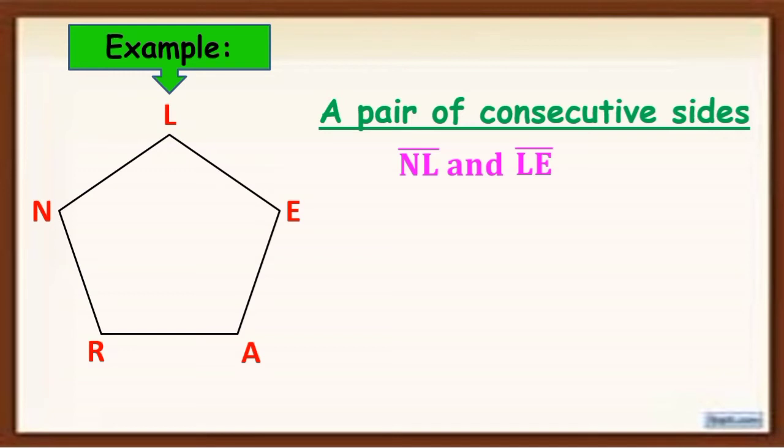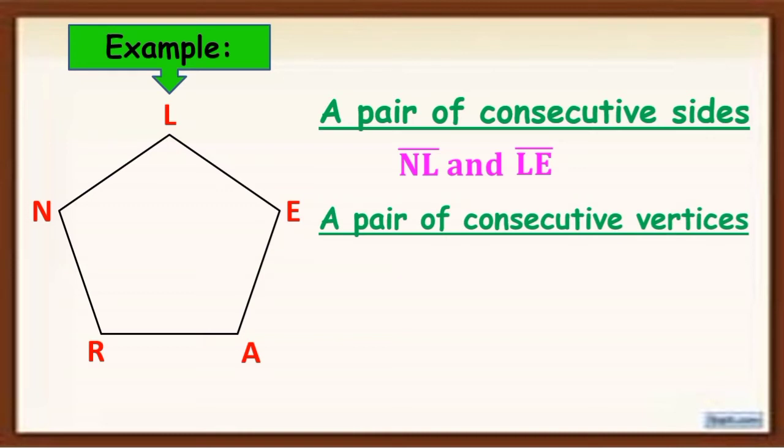Now, next is a pair of consecutive vertices. So again, consecutive, magkasunod. So what are the vertices? One of the example is L and E. Pero again, hindi lang po yan yung sagot diyan. Pwede yung LE, EA, AR, RN, or NL or pwede yung baliktaran yan. Pwede.